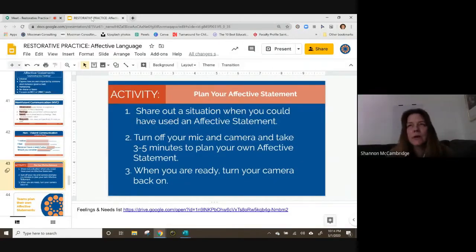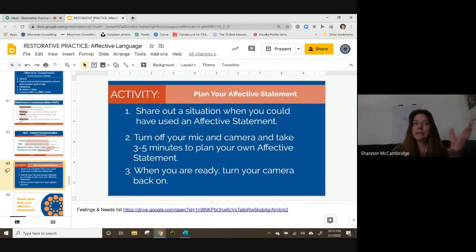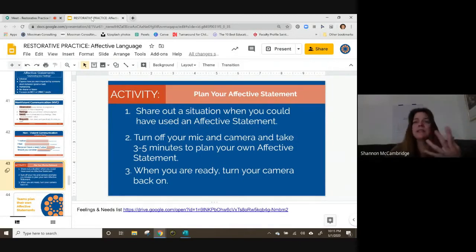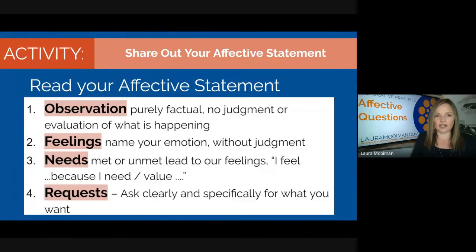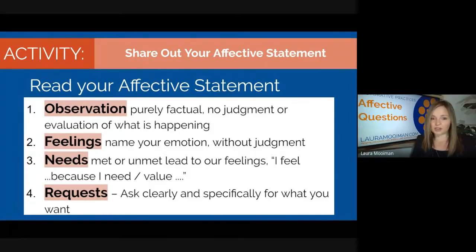One participant described her situation: a student who, when asked to do something he didn't want to do, would yell back, saying things like 'You're always telling me I'm doing something wrong' or 'You're always telling me to put my things away.' She admitted she never really knew exactly how to deal with it. The instructor set up the share-out: read your affective statement aloud — tone of voice counts, no sighing or eye-rolling — starting with a purely factual observation.